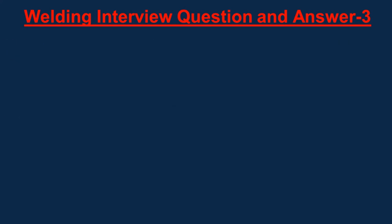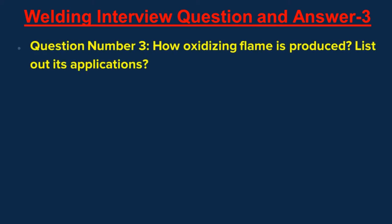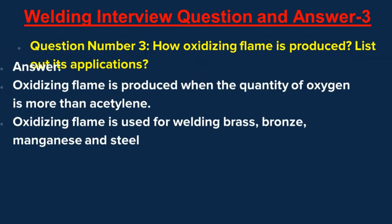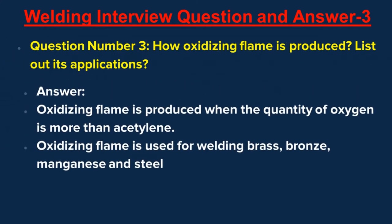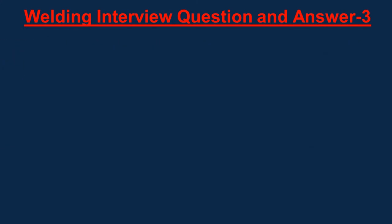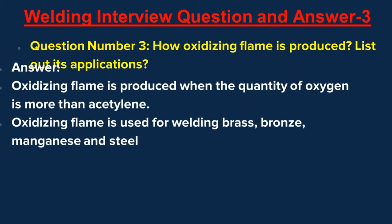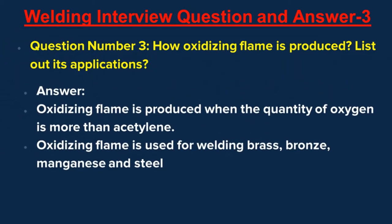Question number three: How is oxidizing flame produced? List out its applications. Answer: Oxidizing flame is produced when the quantity of oxygen is more than acetylene. Oxidizing flame is used for welding brass, bronze, manganese, and steel.